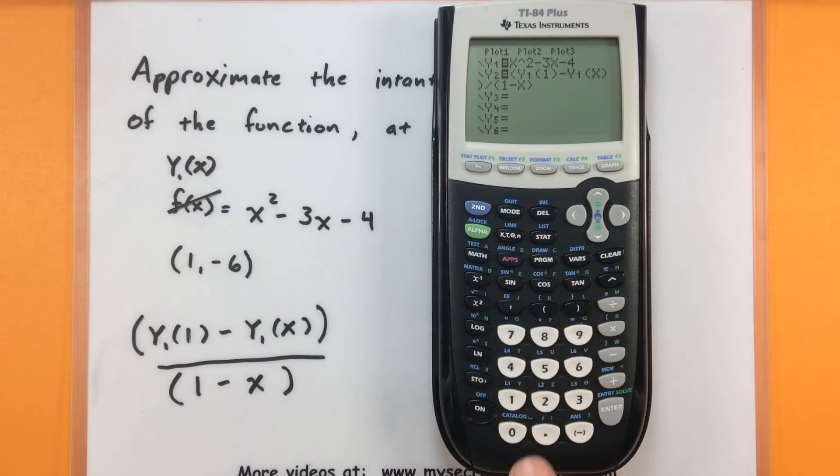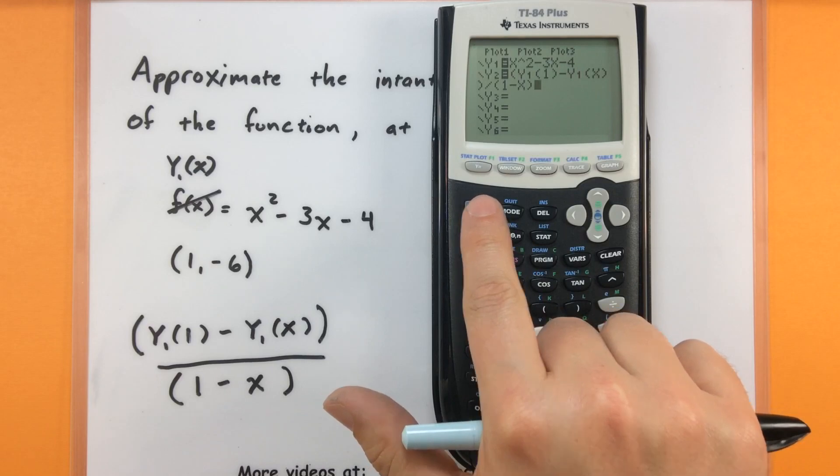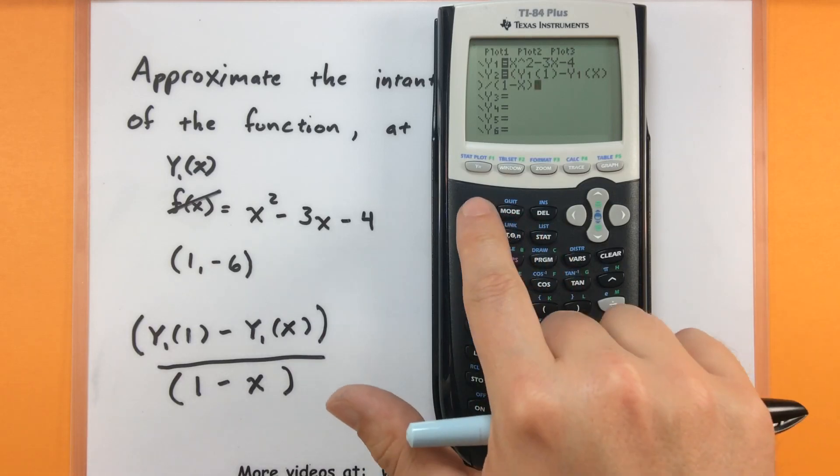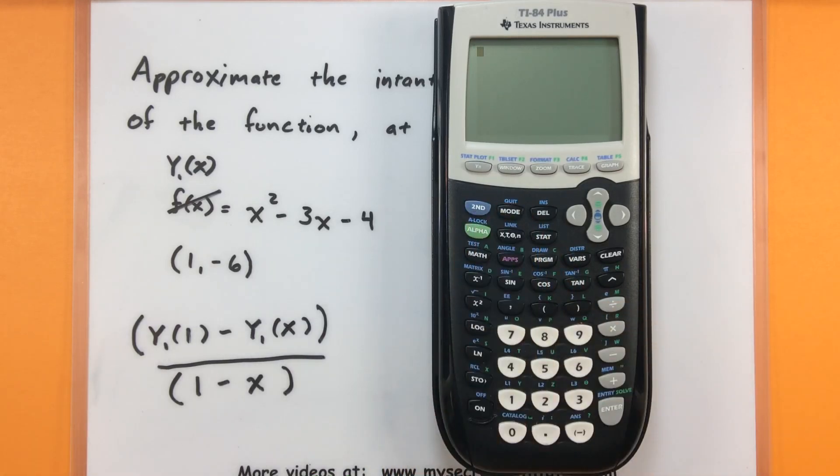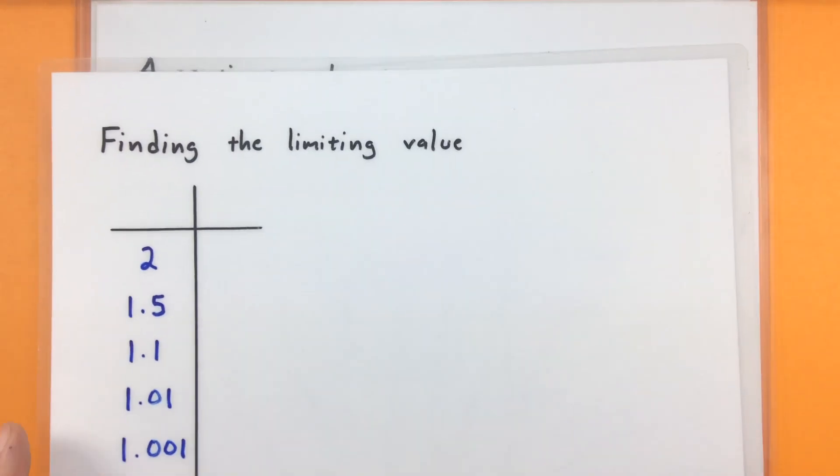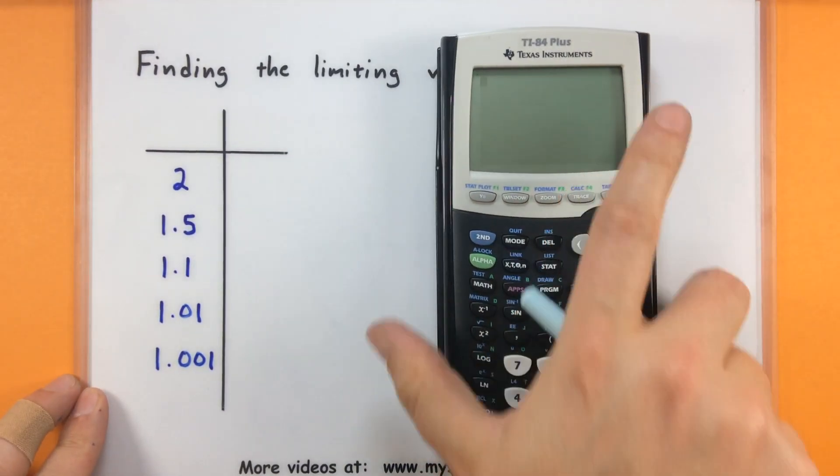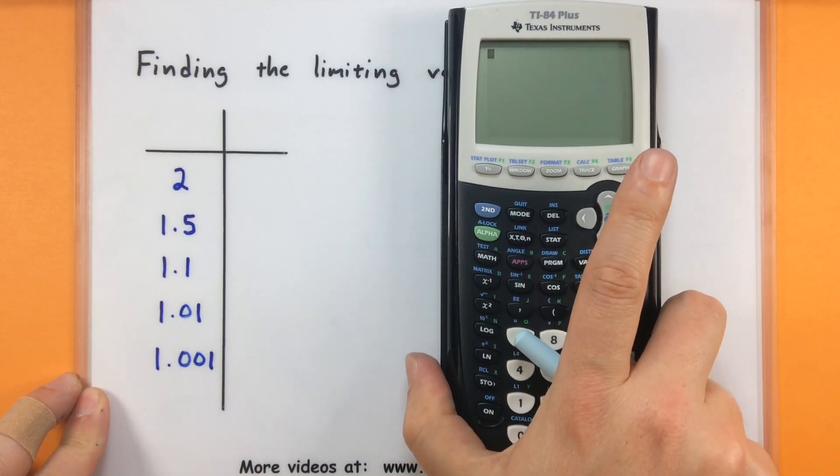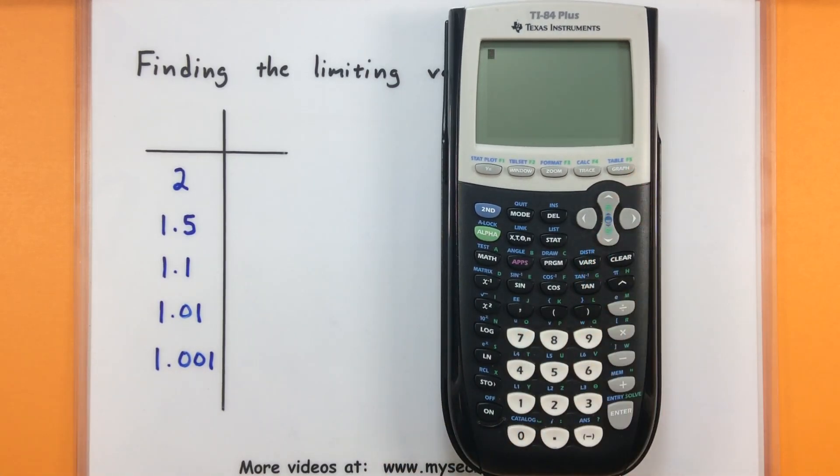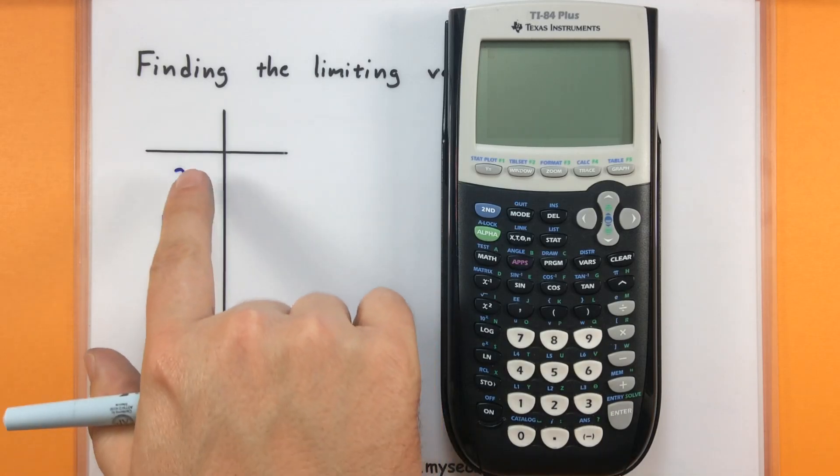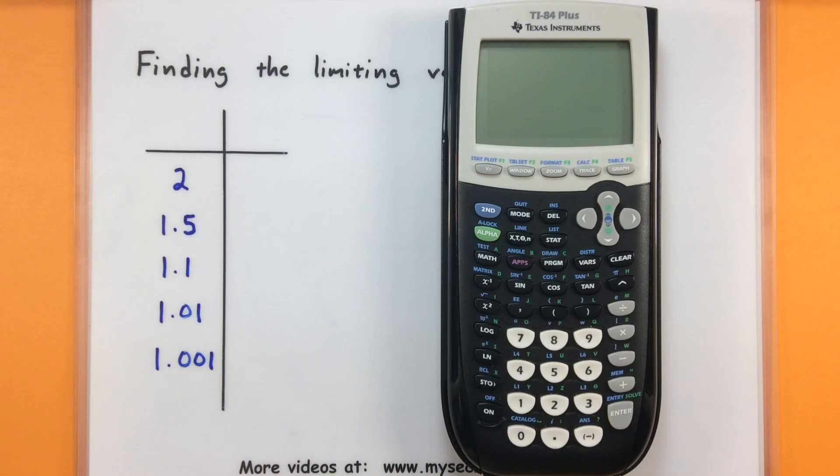So for the feeding in process we need to get back to the home screen. Let's go ahead and press second quit and go back to that home screen. So the point that we are interested in is the point (1, -6). And I'll choose other x values a little bit further away to see what the slope is through those. And here are some of the other x values we'll end up choosing and see what we get.